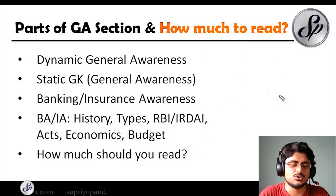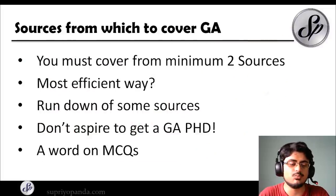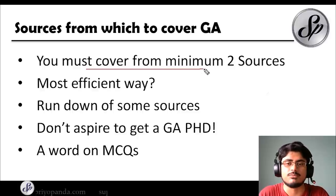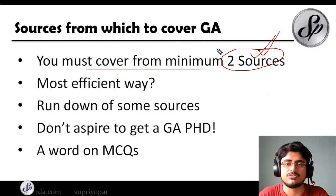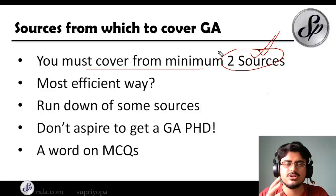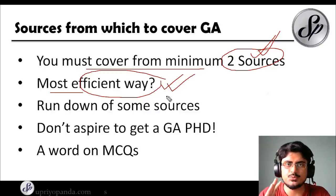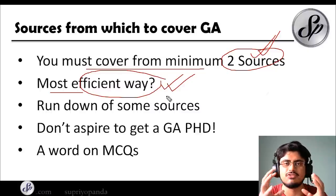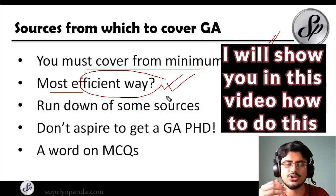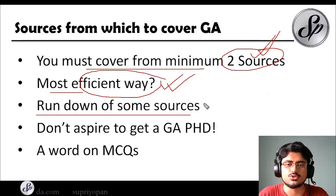Now let's talk about sources. You must cover from a minimum of two sources — do not rely on a single source. Keep one source for your daily current affairs, and take another source for their monthly PDF. The most efficient way is to condense whatever information is on the websites or apps and make your own notes. Let's check some sources for our general awareness preparation.